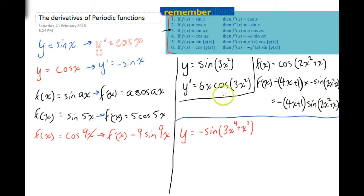Now I've just put this one in here to illustrate an important point. If y equals negative sine 3x to the 4 plus x squared, y dash is going to equal the derivative of whatever is in there. So that's 12x to the 3 plus 2x times the derivative of whatever this is. Now if the derivative of sine is cos, then the derivative of negative sine is negative cos.